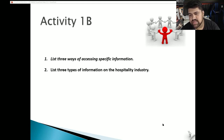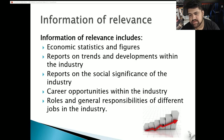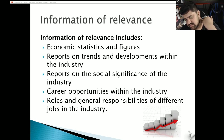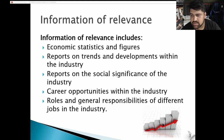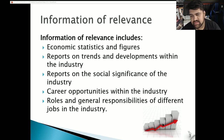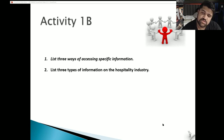List three types of information on the hospitality industry. There is so much available — this could involve statistics and figures, upcoming or previous trends, any developments within the industry, social significance updates, career opportunities, and roles and general responsibilities for different jobs in the industry. You only need to list three, so include some of those or add your own ideas. Once you're done, come back and we can move on to the next one.